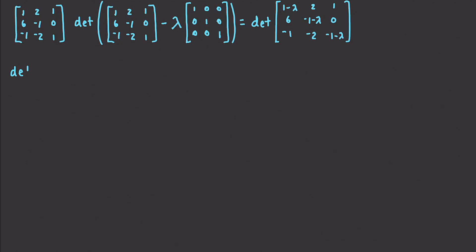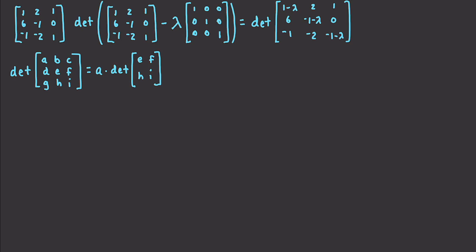That formula is going to be the determinant of A, B, C, D, E, F, G, H, and I. How you find the determinant is: you take A times the determinant of E, F, H, and I — starting with A and ignoring anything in the same row and column, leaving E, F, H, and I. Then subtract B times the determinant ignoring the top row and the middle column, giving D, F, G, and I. Then plus C times the determinant, ignoring C's row and column, leaving D, E, G, and H.